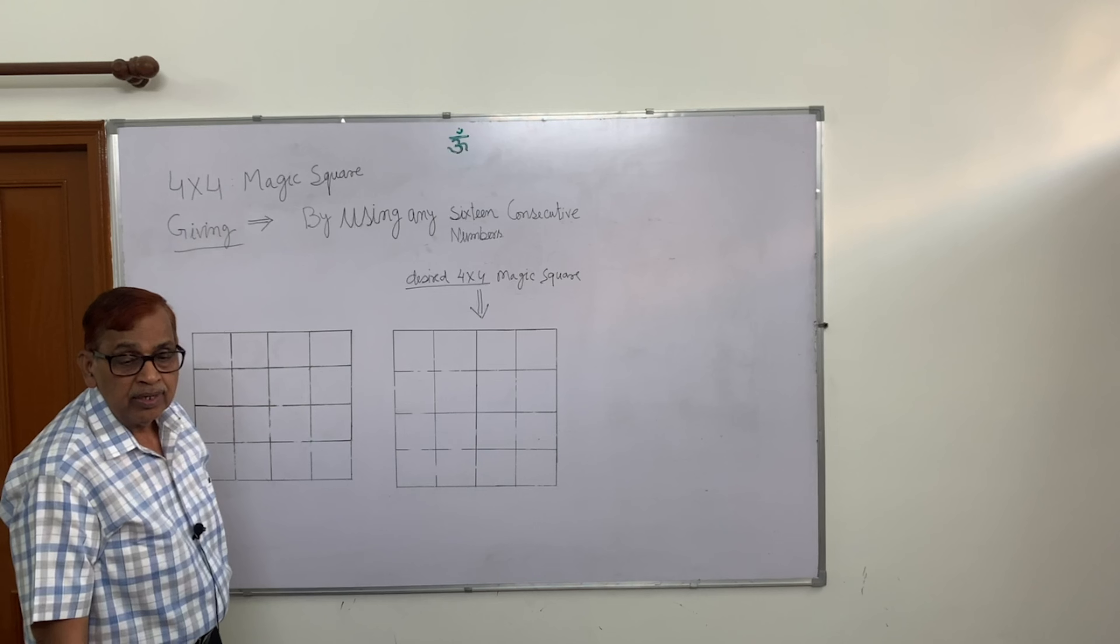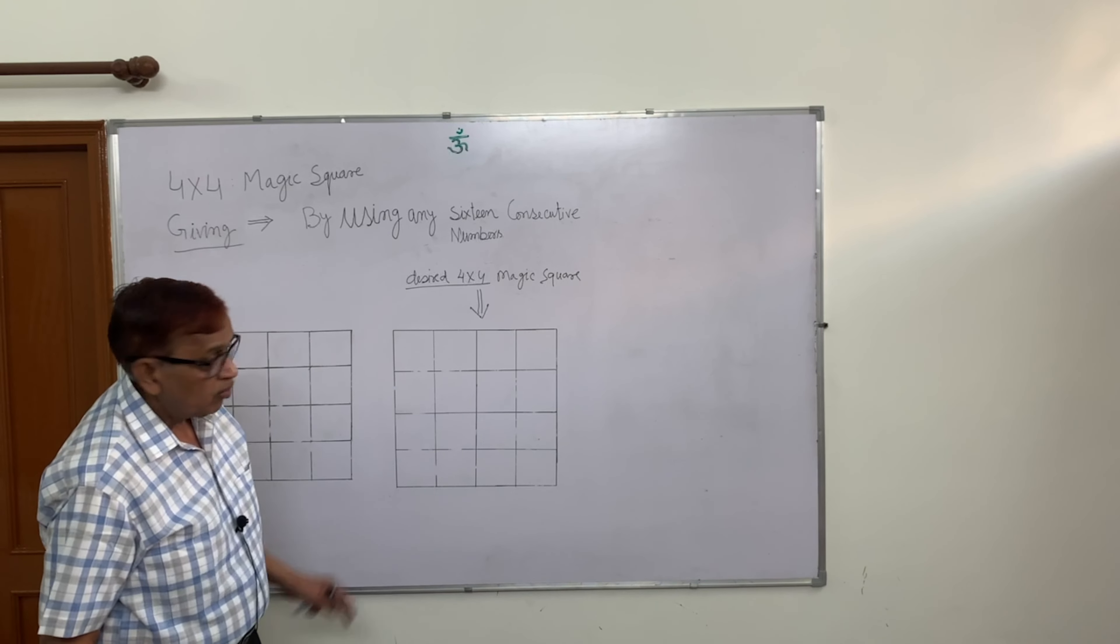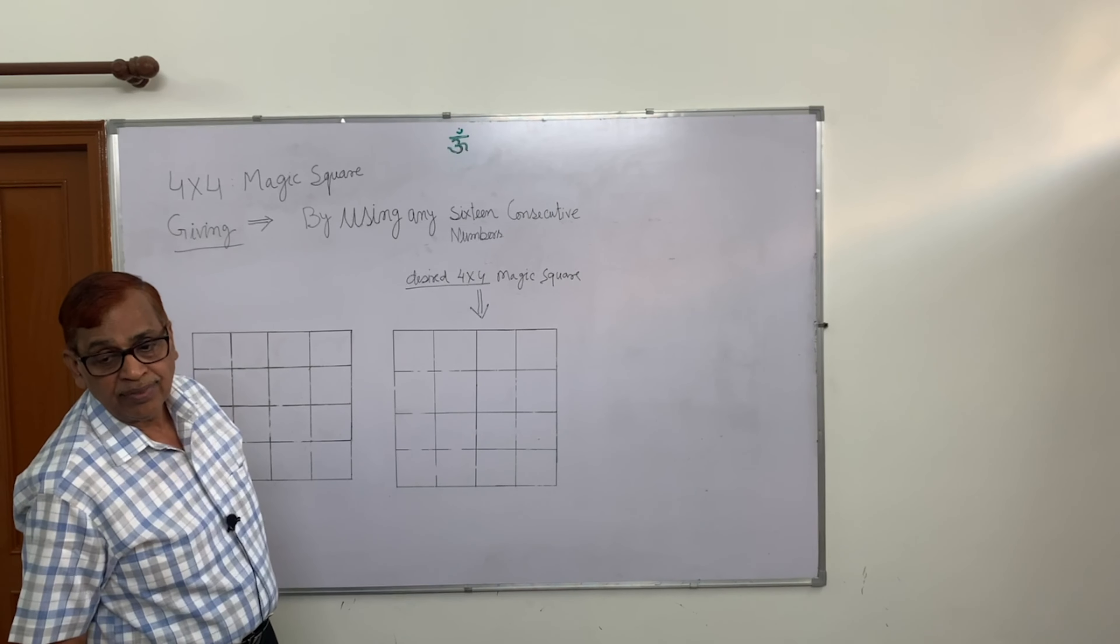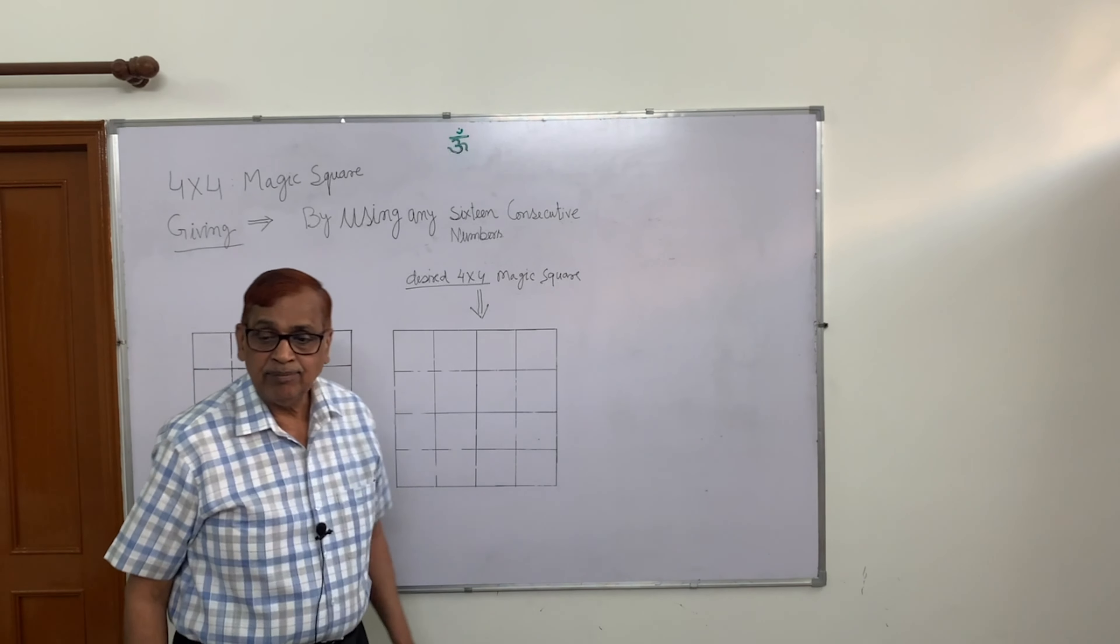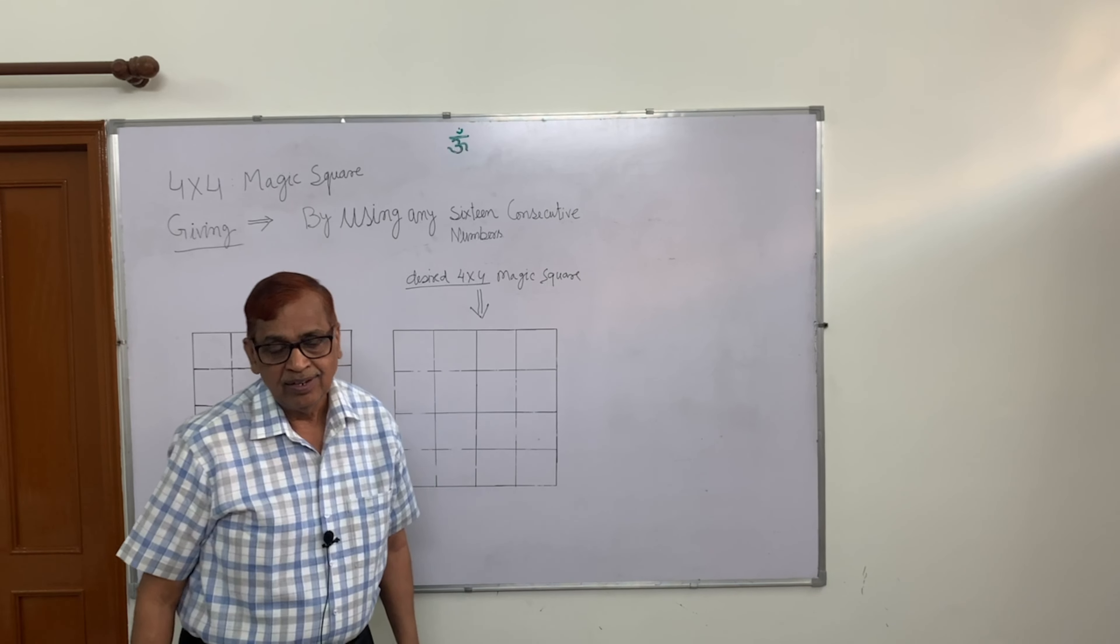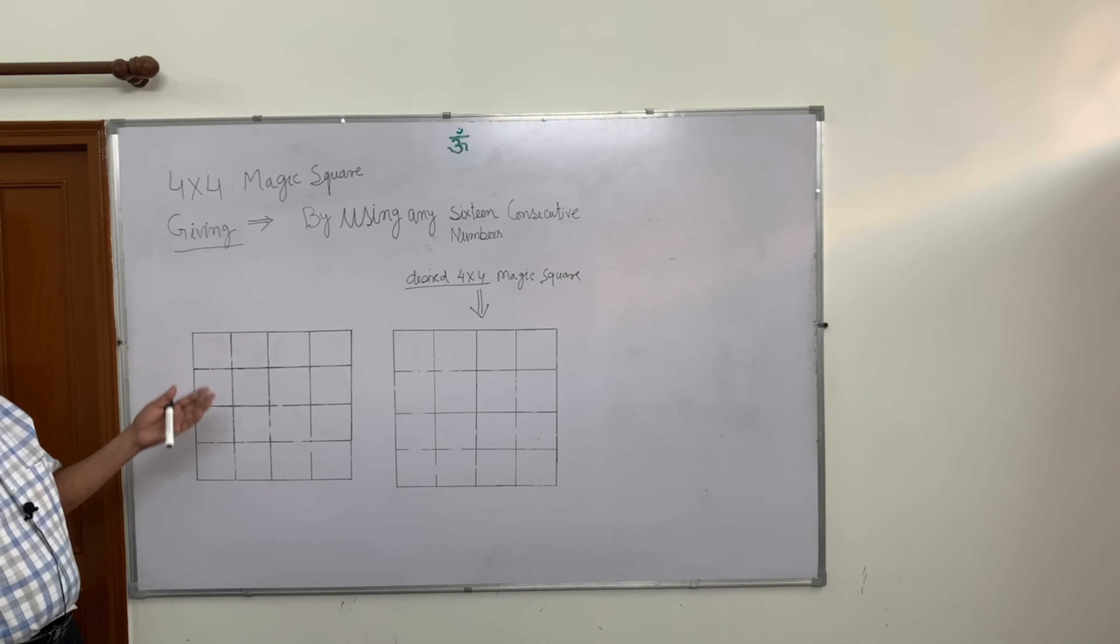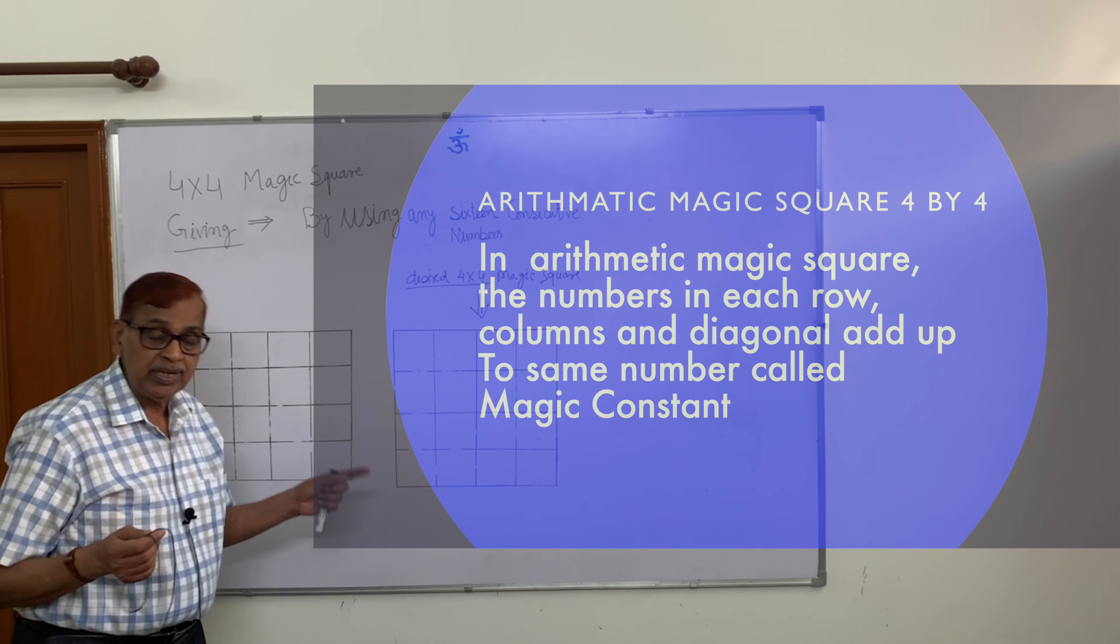The students said that you have written the numbers in ascending order and then made it, but I kept the diagonal elements the same. Now the students said they want to reverse the diagonal elements.